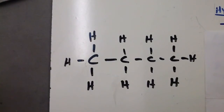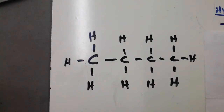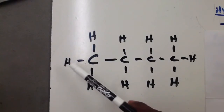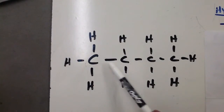To recap: a hydrocarbon is a molecule that contains only hydrogen and carbon. A saturated hydrocarbon contains only single covalent bonds between the carbon atoms. An unsaturated hydrocarbon contains at least one double or triple bond between the carbon atoms. We can confirm a hydrocarbon is saturated when we see only carbon and hydrogen atoms present with only single bonds between the carbons.